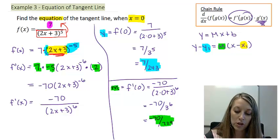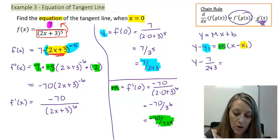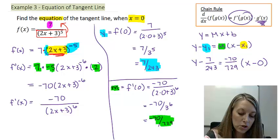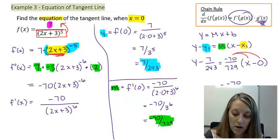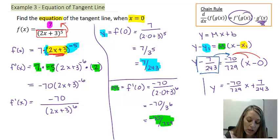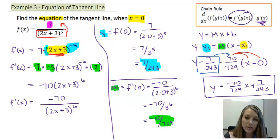Now I can write the equation of the tangent line: y minus 7/243 equals negative 70/729 times (x minus 0). Distributing gives me negative 70/729 times x on the right. Moving the constant over, I get y equals negative 70/729 x plus 7/243. That is my final equation of the tangent line.